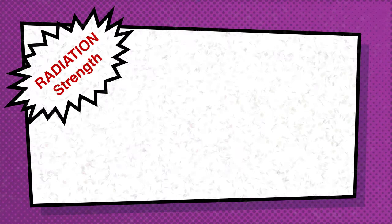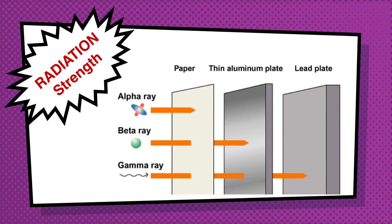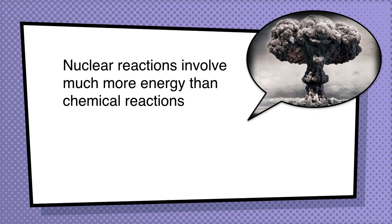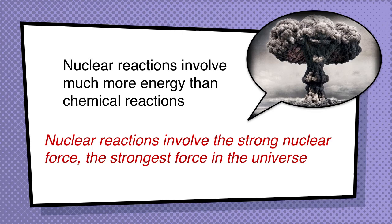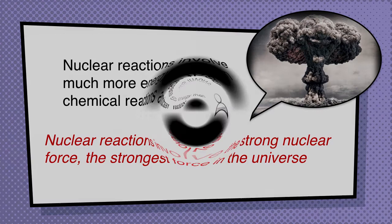Now the relative strengths of these particles — radiation strength. An alpha particle cannot penetrate a piece of paper, so it doesn't have very much penetrating strength. A beta particle requires aluminum foil to stop it. But a gamma particle takes a lead plate or about two yards of earth to stop it, so the gamma particle has the most strength and the alpha particle has the least. Nuclear reactions have a lot more energy than any chemical reaction, involving the strong nuclear force — the strongest force in the universe.